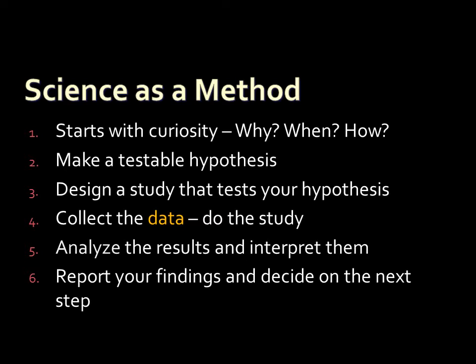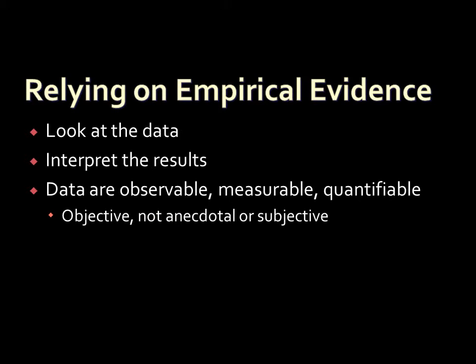I want to say a few words about the kind of data and evidence used in psychology studies. In the fifth step, the researcher analyzes their data and interprets the results. It's really important that the data we have are things that are observable, measurable, and quantifiable. This is why the scientific method is so important — it allows us to understand things that are objective, not anecdotal or subjective.